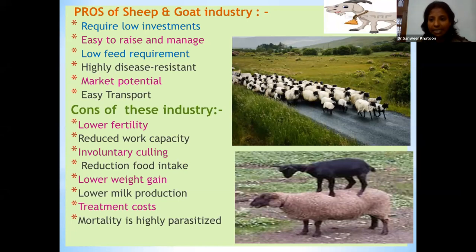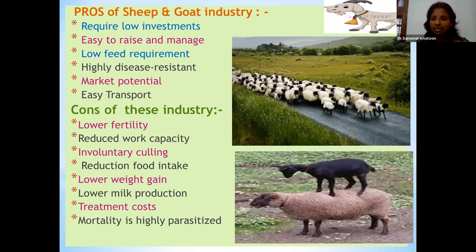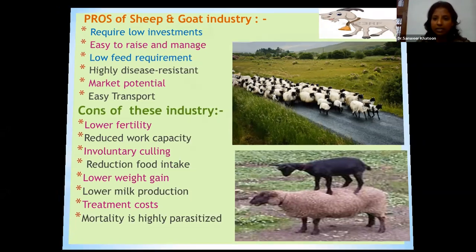On the other hand, the fertility rate of these animals is very low. Moreover, they have reduced working capacity, low weight, lower milk production, high treatment cost, and above all, higher mortality in the case of small ruminants. These parasitic diseases are playing a very important role, dragging this industry behind and not allowing it to flourish in the country.